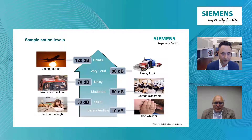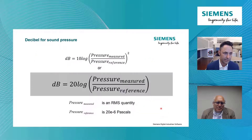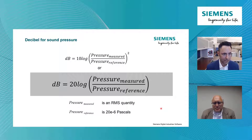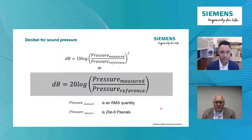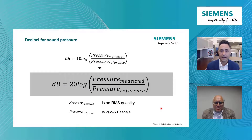So how does this decibel work? How do we convert from pressure in pascals to decibels? We use this equation, and it's really just a logarithmic ratio of two numbers. That's all a decibel is, and it isn't specific to acoustics or sound pressure. You can take any numbers and theoretically convert it into decibels. It's really just a logarithmic ratio.